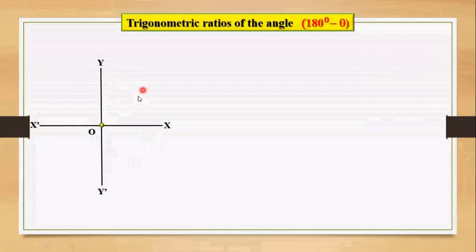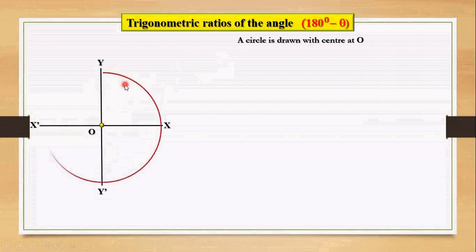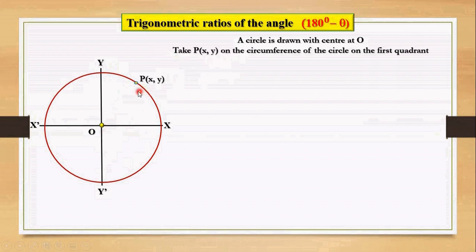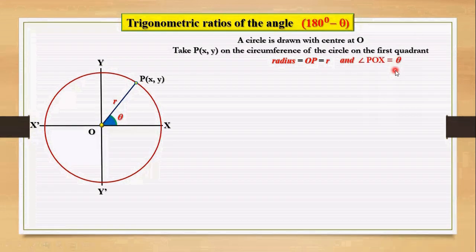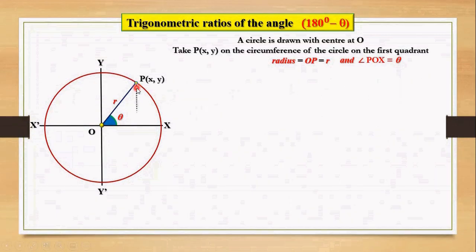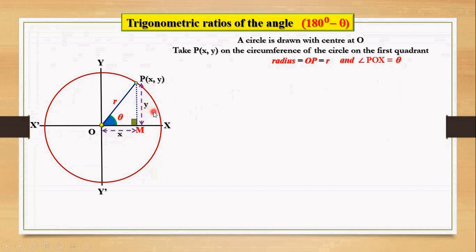For this, let's take axis of coordinates and a circle is drawn with the center at origin O and a point P(x, y) is taken on the circumference in the first quadrant. We have taken this point in such a way that OP is the radius r and angle POX is theta, an acute angle. Let's draw PM perpendicular to the x-axis so that with the help of this coordinate P(x, y), we can have the length of OM as x and length of PM as y.